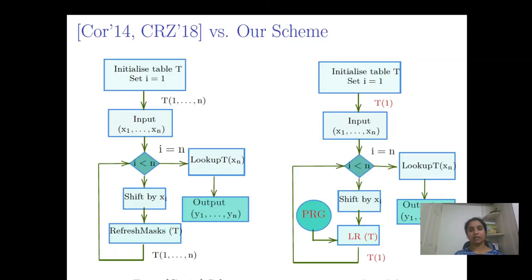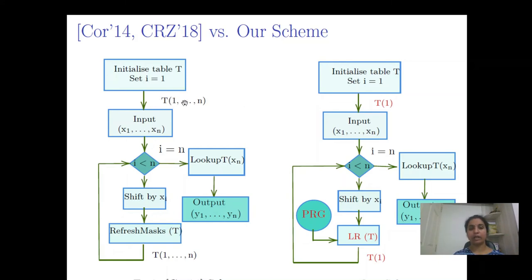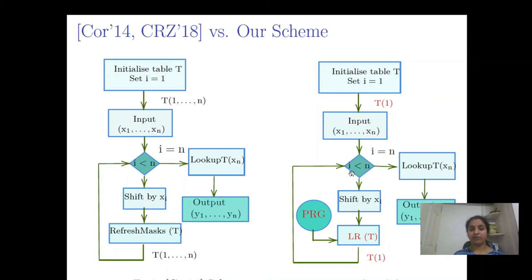In the high-level comparison of our scheme versus the higher order lookup table-based scheme, our scheme has only a single column lookup table whereas the prior scheme has n columns. The refresh masks are replaced by locality refresh (LR), and the randomness is generated from a PRG. Once the n-1 steps are finished, the final lookup is similar to the original scheme.